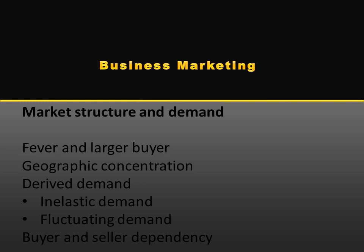Now, moving towards the characteristics of market structure and demand. The first characteristic is fewer and larger buyers. For instance, if we talk about an industrialist who wants to purchase particular equipment or machinery, these types of buyers will be small in numbers but may purchase with a huge amount of money.